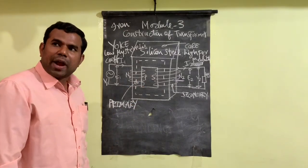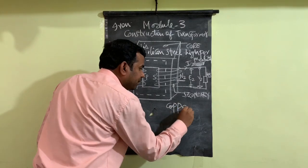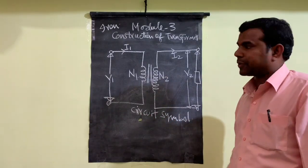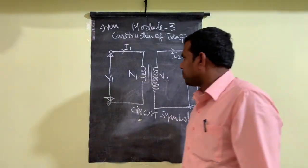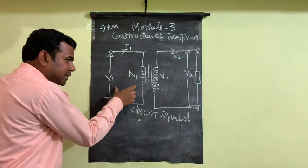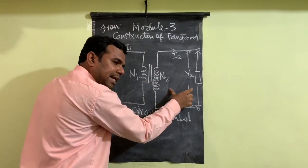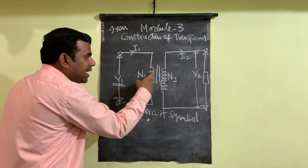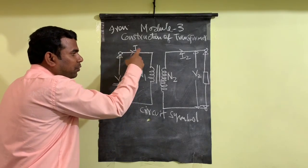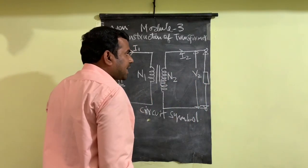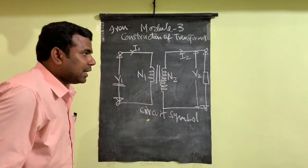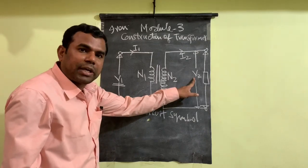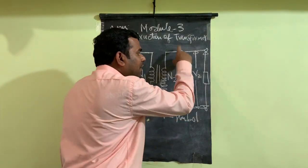The material used for making the windings of a transformer is copper. Looking at the circuit symbol of a transformer, there are two circuits: the primary circuit and the secondary circuit. The supply voltage V1 is applied to the primary winding with N1 turns, and primary current I1 flows through it. In the secondary circuit there are N2 turns, the load is connected, the voltage across the load is V2 (the secondary terminal voltage), and I2 is the current flowing through the load.